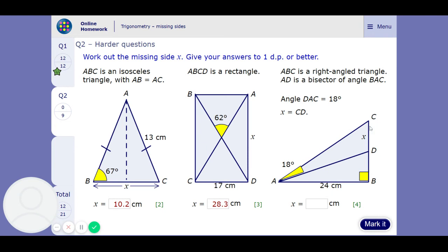Oh, it's a bisector of angle BAC. Okay, this makes it much easier. This angle down here is going to be 18 as well, which means this whole angle is going to be 36.